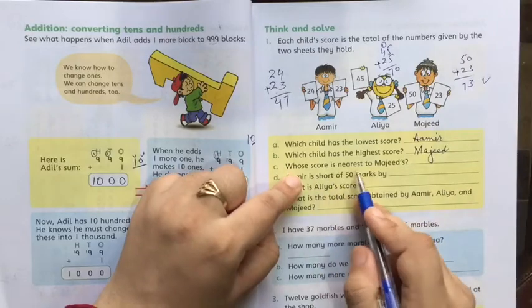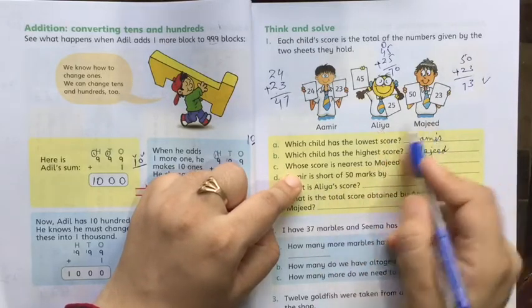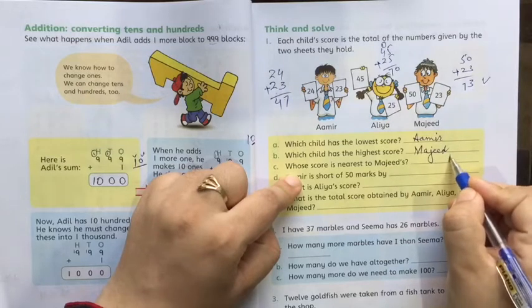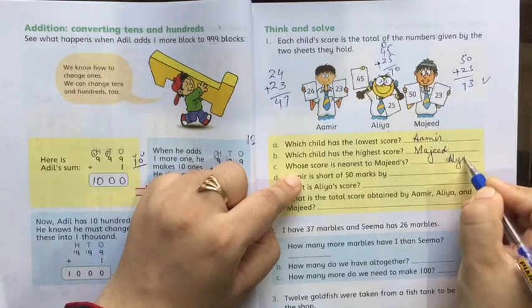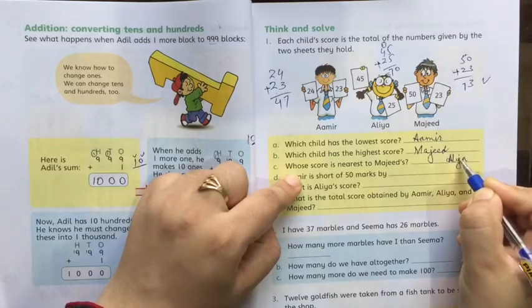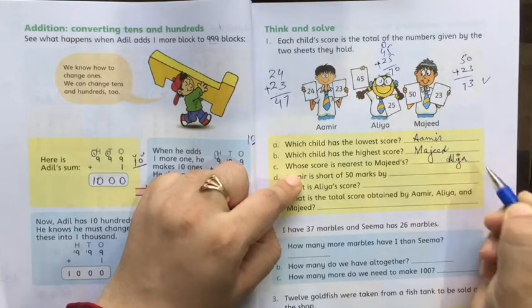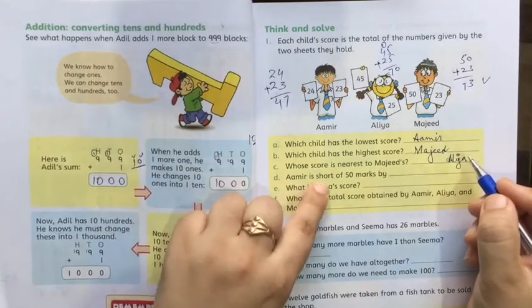Whose score is nearest to Majeed? The closest is Aliyah's. Aliyah is at 70. Aliyah.